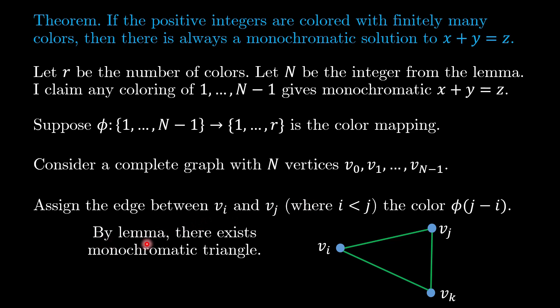Now we can apply the lemma that we have proven earlier to conclude that there will exist a monochromatic triangle. So say the monochromatic triangle is between v_i, v_j and v_k, where i less than j less than k.